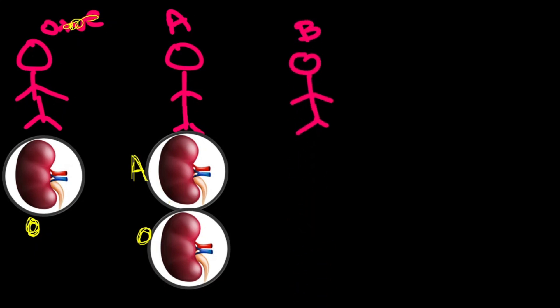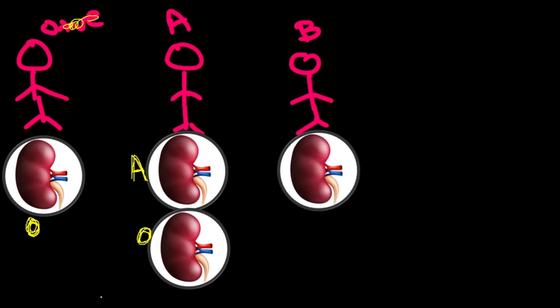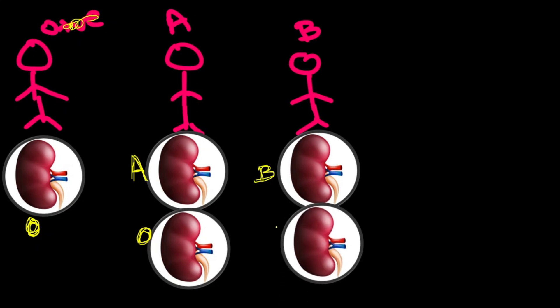A B blood group patient can receive a kidney from the same blood group, which is B, and also from O, because O blood group doesn't have any antigen, so the B blood group patient won't attack that kidney.